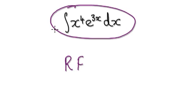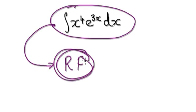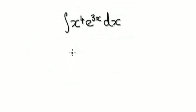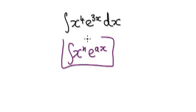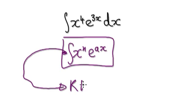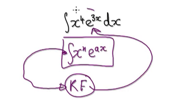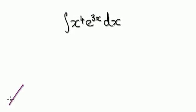So use integration by parts to produce the reduction formula, and then from the reduction formula, use it to integrate this. The reduction formula is used starting out with x to the N times e to the A times x, and then use integration by parts here to obtain the reduction formula. Then use the reduction formula to evaluate this. Press pause and have a go.